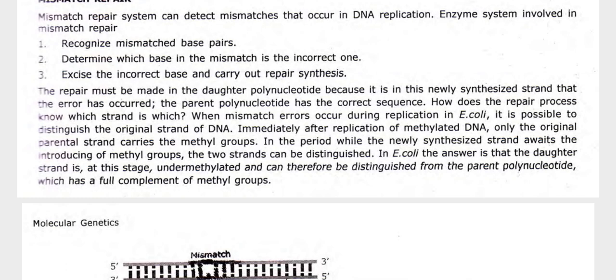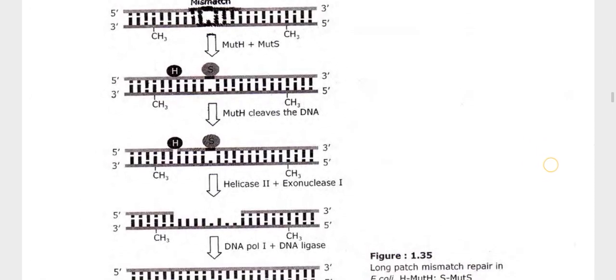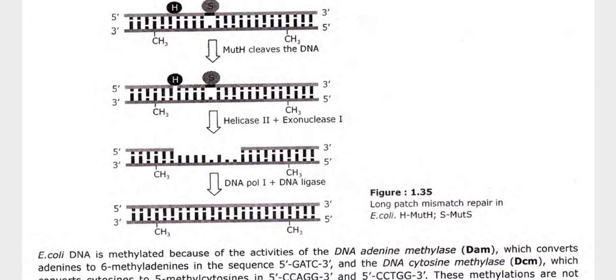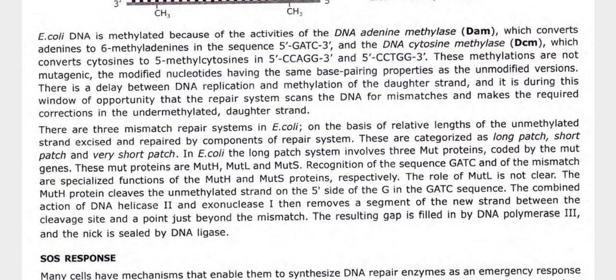In long patch mismatch repair in E. coli, a mismatch triggers DNA helicase II plus exonuclease I and DNA polymerase III. E. coli DNA is methylated by DNA adenine methylase, which converts adenine into 6-methyladenine in the sequence 5'-GATC-3', and by a cytosine methylase, which converts cytosine to 5-methylcytosine in the sequence 5'-CCAGG-3'. These methylations are not mutagenic, and the modified nucleotides have the same base-pairing properties as unmodified versions.